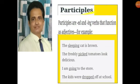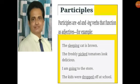A participle acts as an adjective. For example: number one, the sleeping cat is brown — 'sleeping' is a participle here. Number two, the freshly picked tomatoes look delicious — 'picked' is a participle here. Number three, I am going to the store — 'going' is a participle here. The kids were dropped off at school — 'dropped' is a participle here. The man saw a laughing beggar — 'laughing' is a participle here. The girl purchased a dancing doll — 'dancing' is a participle here. Having finished my dinner, I went out — 'having finished' is a participle here.